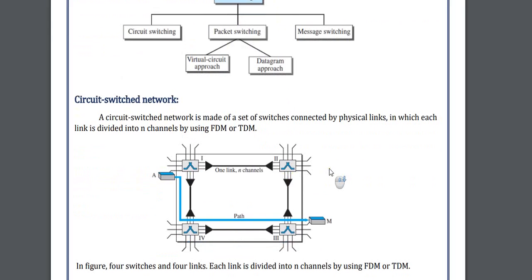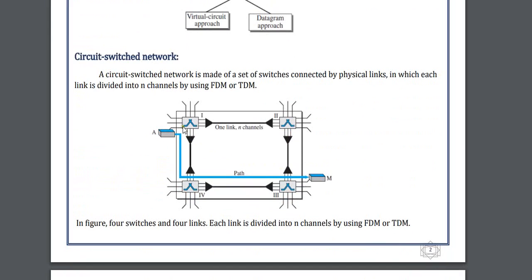Circuit switching. In circuit switching, the switch first needs to generate a path — for example, if A wants to communicate with M, it will first generate a path for how to reach M, and then it will send the data. This is known as circuit switching. In circuit switching we use FDM and TDM, which is frequency division multiplexing and time division multiplexing.